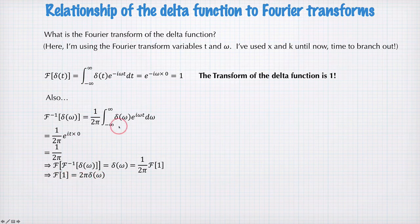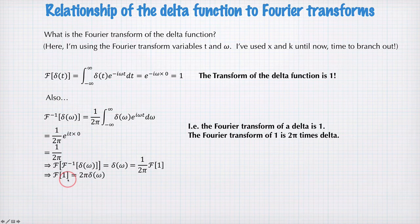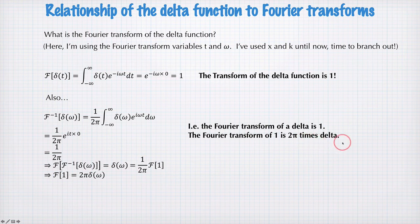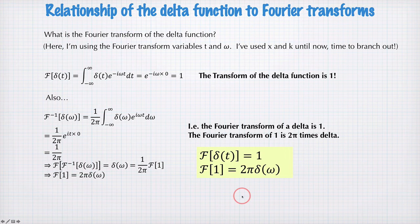So we've discovered the Fourier transform of the delta function and also the Fourier transform of a constant. So the Fourier transform of a delta is one. The Fourier transform of one is two pi times the delta function. Or written out mathematically, it looks like this.